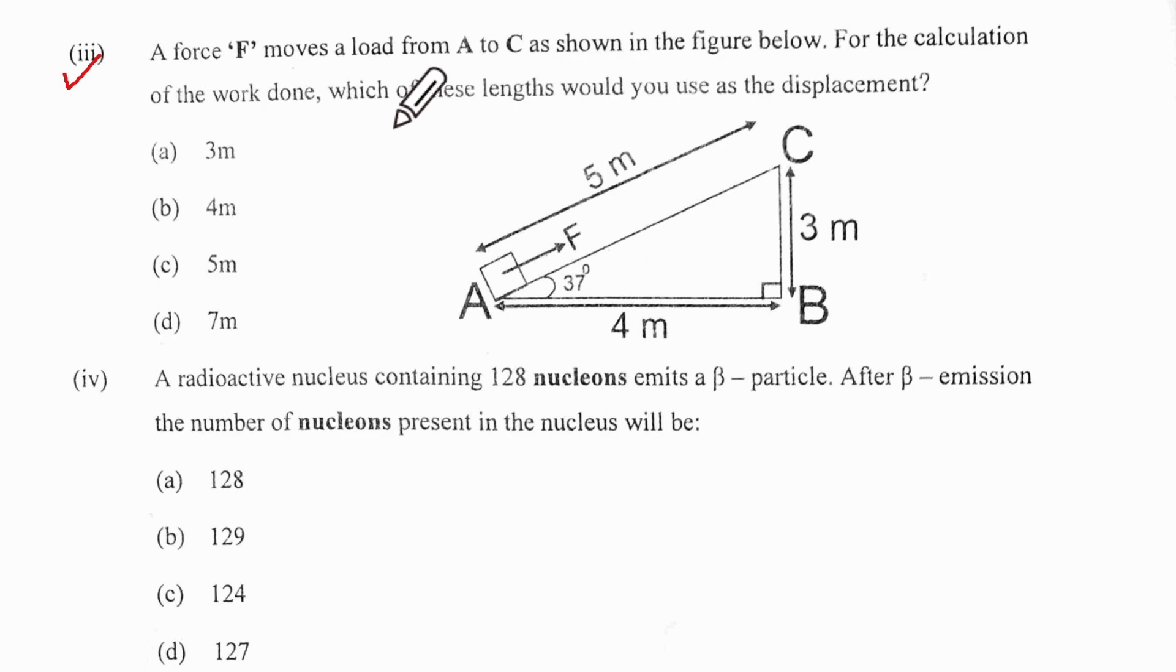Question 3 seems to be a little tricky. The force F moves the load from A to C. At a glance, when you look at this, for the calculation of work done, which of these lengths would you use as the displacement? Now the force is actually displacing through 5 meters. So I would prefer this answer. This is the correct answer for the work done by the force.